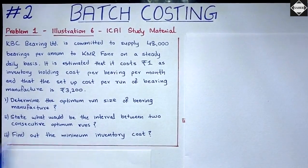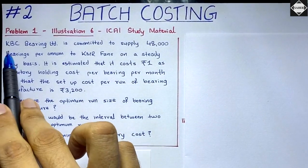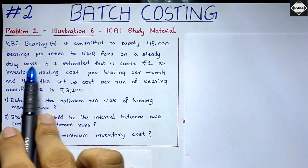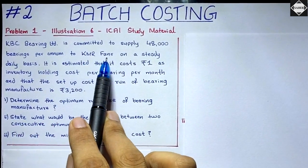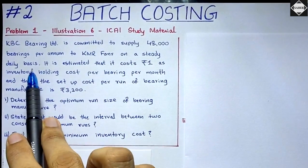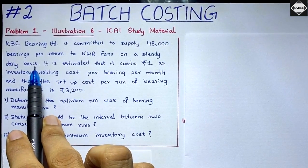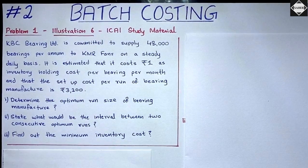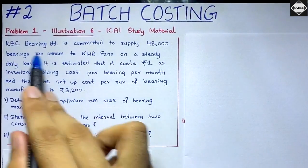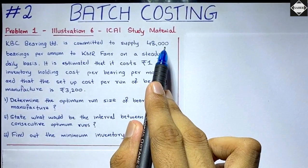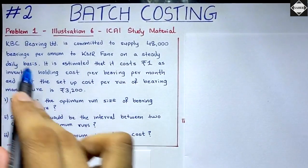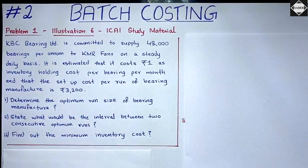Let's go through the question. KBC Bearing Limited is committed to supply 48,000 bearings per annum to KMR Fans on a steady daily basis. From this first sentence we understand that the annual demand of this company is 48,000 units. This company is involved in the manufacturing of bearings.